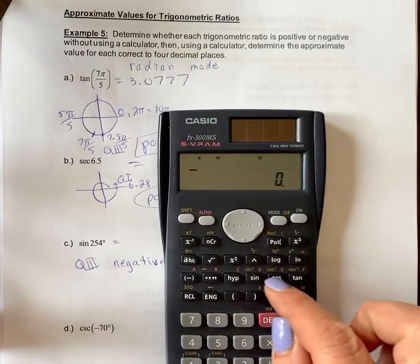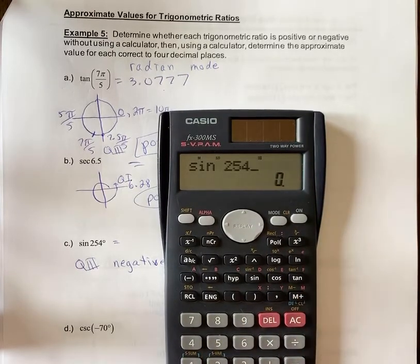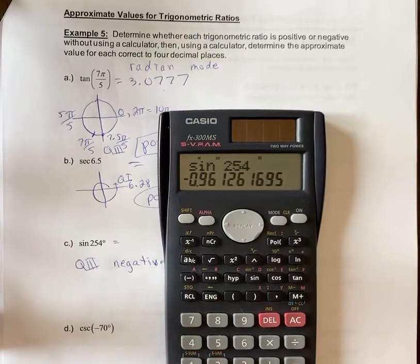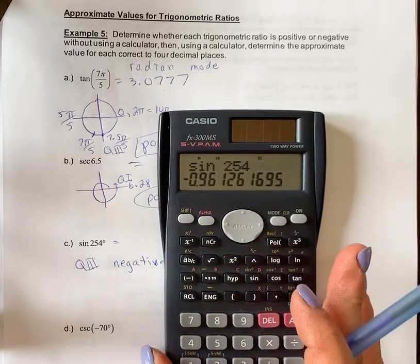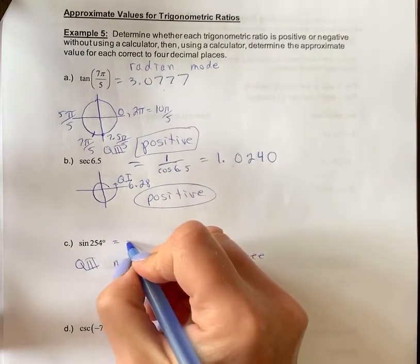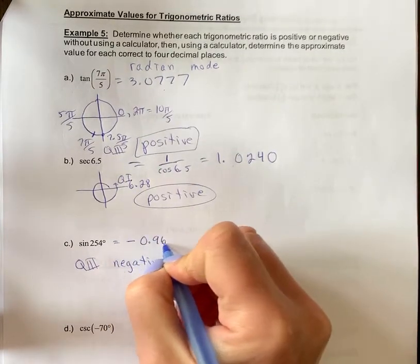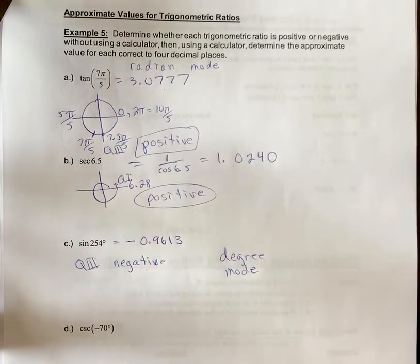So then I just type in sine 254 and I've got my negative answer. We knew it was going to be negative, and negative 0.9613 when you round that. And there you have your answer.